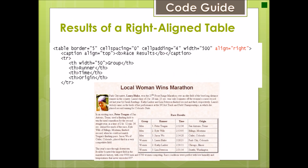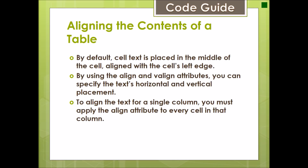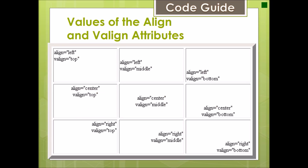This is the result of a right-aligned table using align equal to right. For aligning the contents of a table: by default, cell text is placed in the middle of the cell, aligned with the cell's left edge. Using the align and valign attributes, you can specify horizontal and vertical text placement. To align text for a single column, you must apply the align attribute to every cell in that column. These are examples of align and valign — for instance, align left and valign bottom.